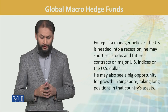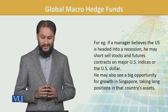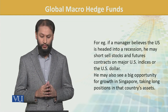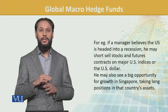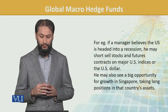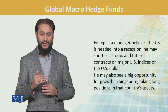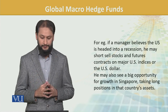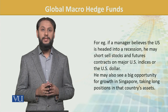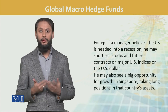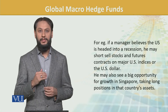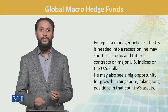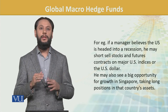For example, if a manager believes the US is headed into recession, he may expect US markets to fall. So he can short US stocks or global-level main stocks and futures contracts that will benefit from a US market recession or fall. At the same time, he sees the opportunity that Singapore is a developing and growing market, so he can take a long position in that.